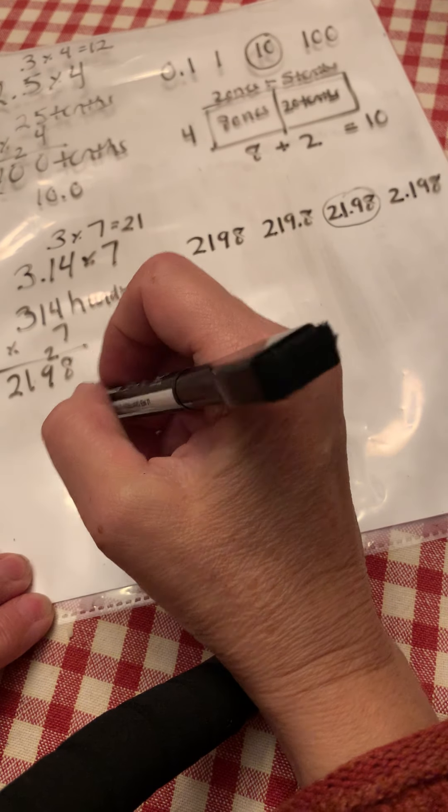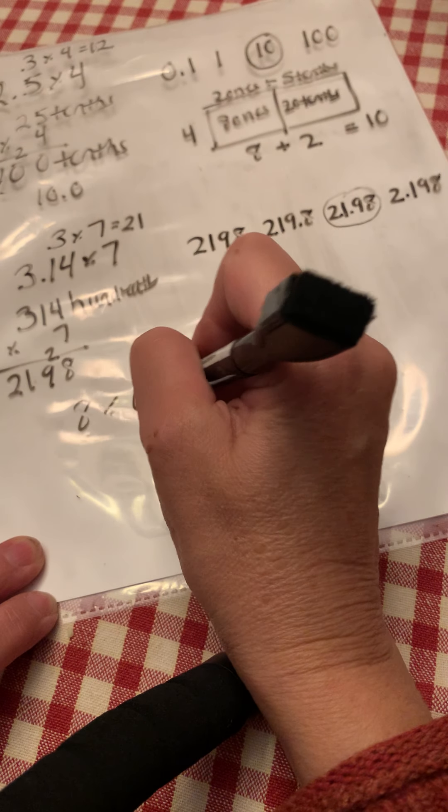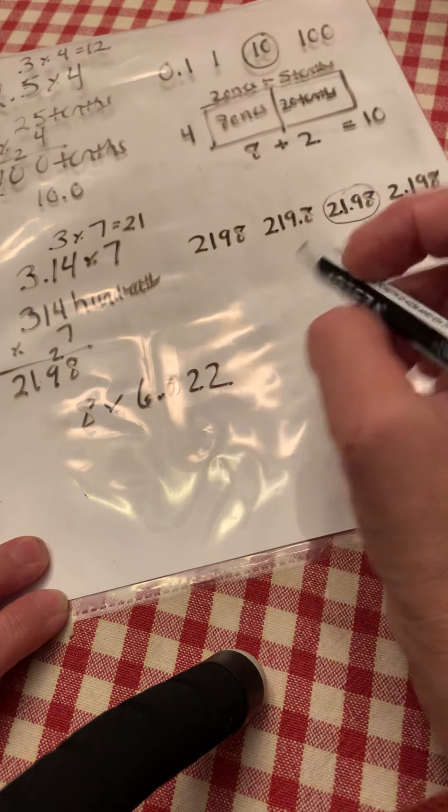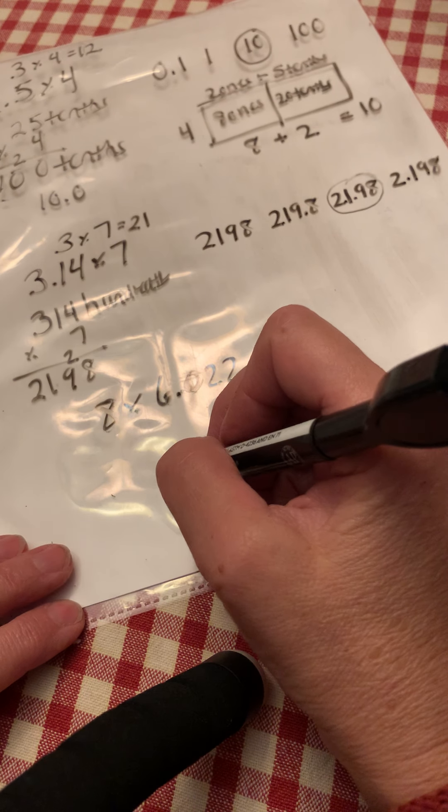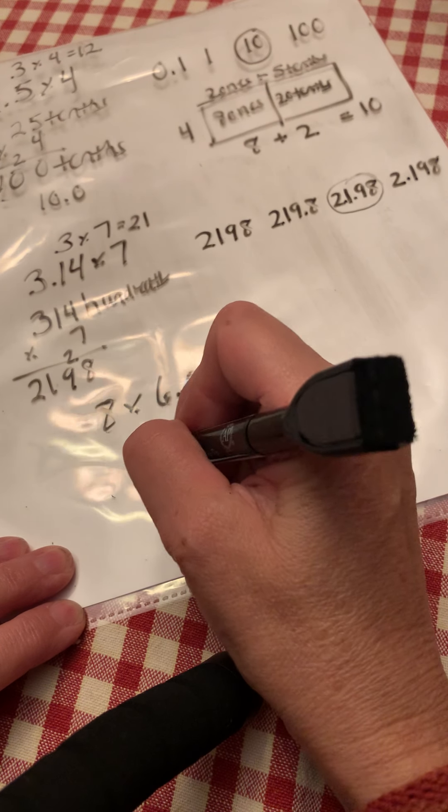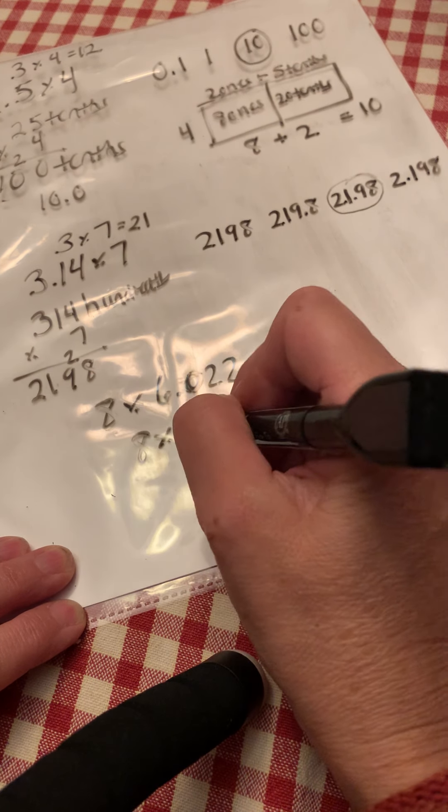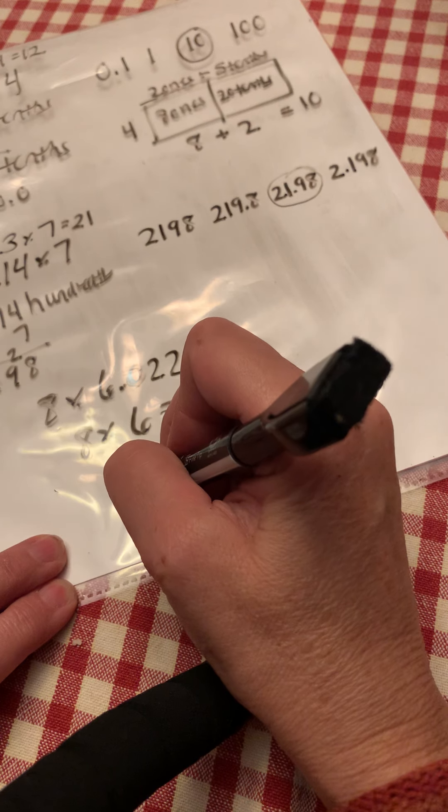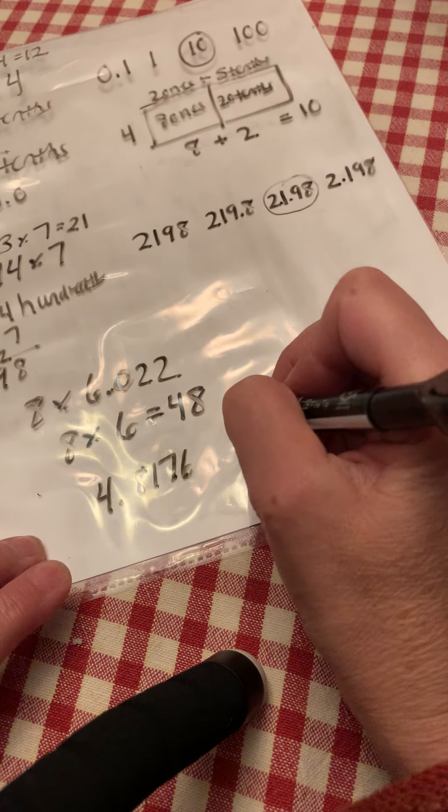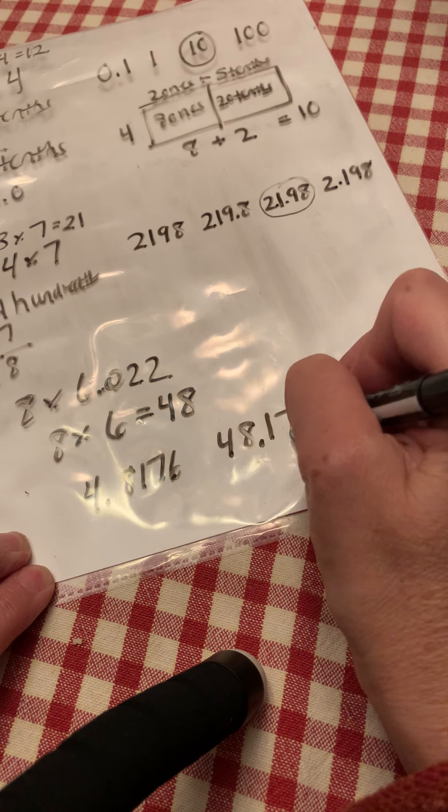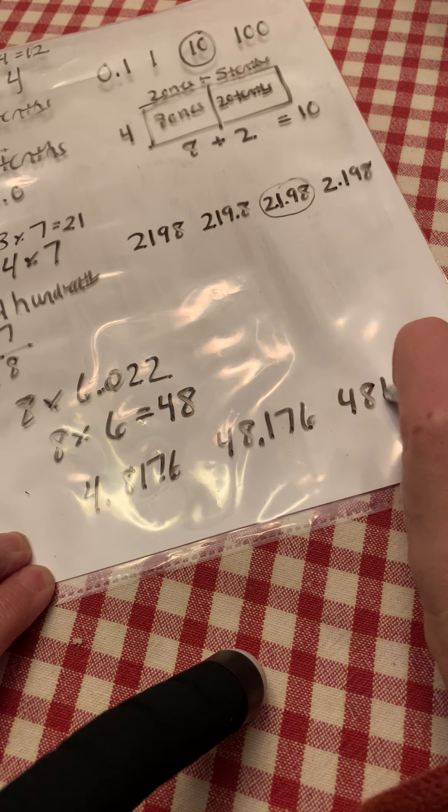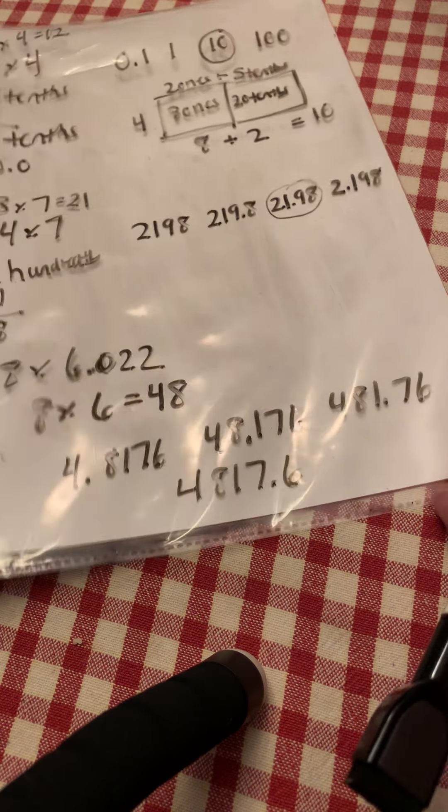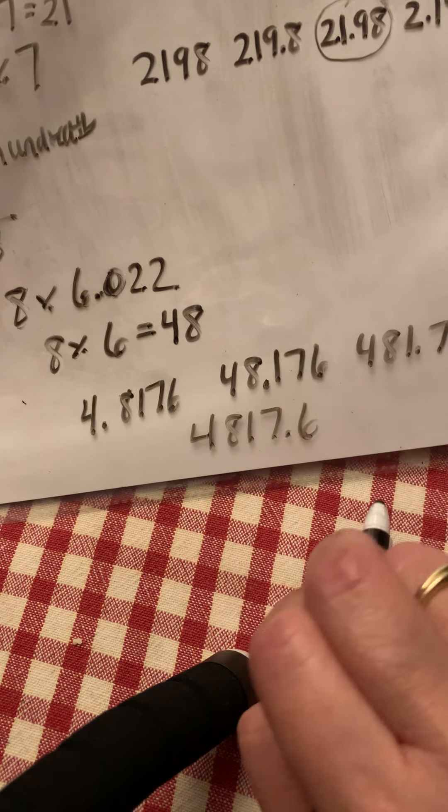Let's look at number three. Number three says eight times 6.022 thousandths. And they give you four choices again to choose from. So first we're going to see what's reasonable. Eight times 6.022 thousandths. We could round that to six. Eight times six is 48. The four choices they gave you are 4.8176, 48.176, 481.76 hundredths, or 4,817.6 tenths. Just based on even this estimation, which of these numbers do you think could be the right answer?